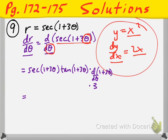The end result is bringing the 3 out in front: 3 times the secant of (1 plus 3θ), multiplied by the tangent of (1 plus 3θ), and that's it.